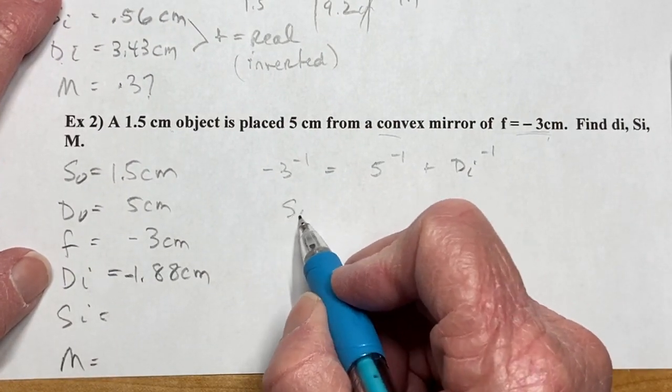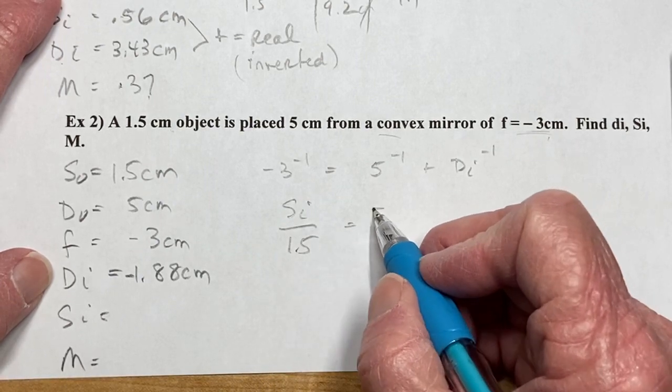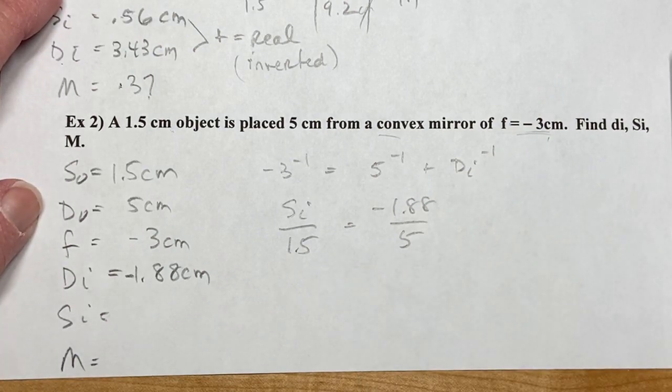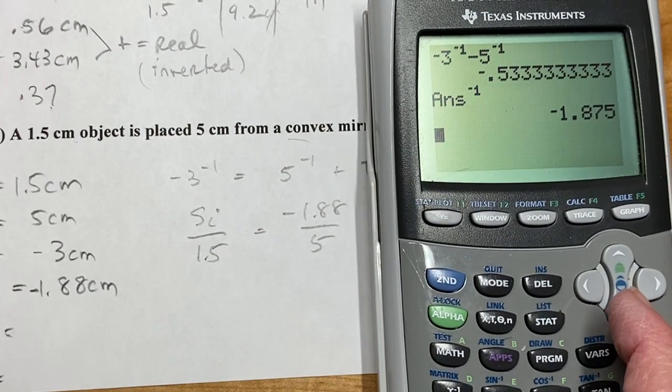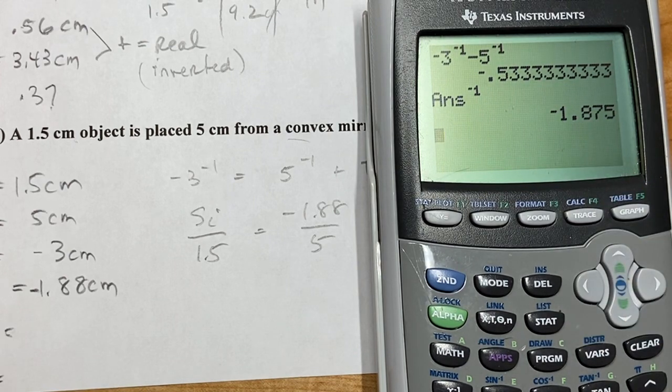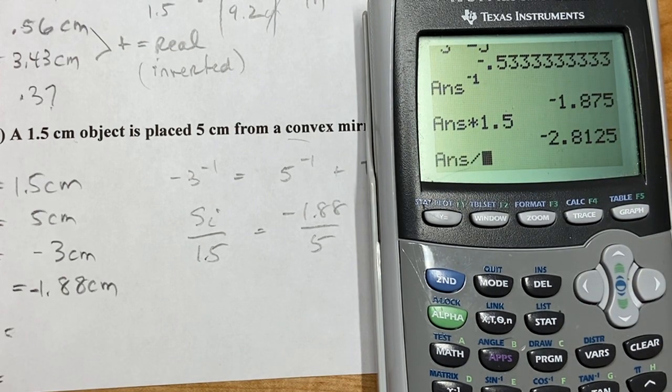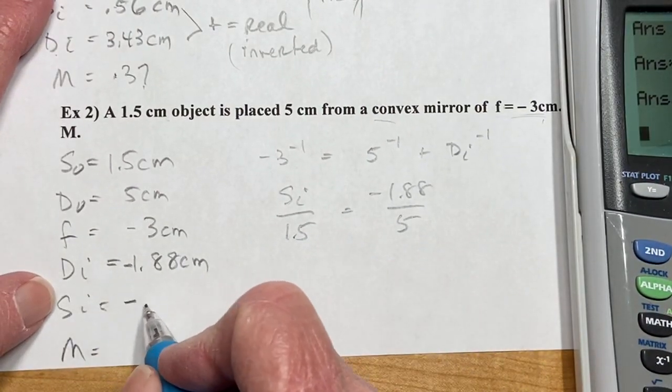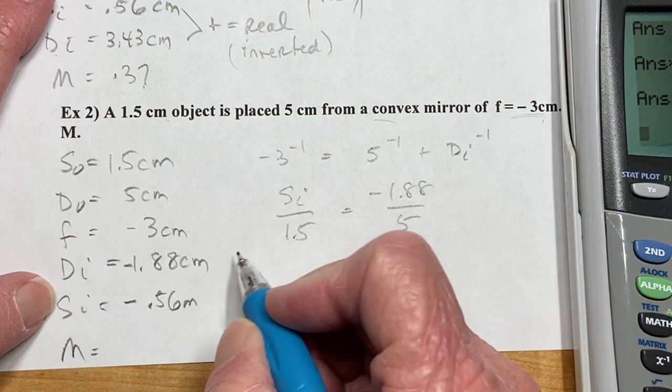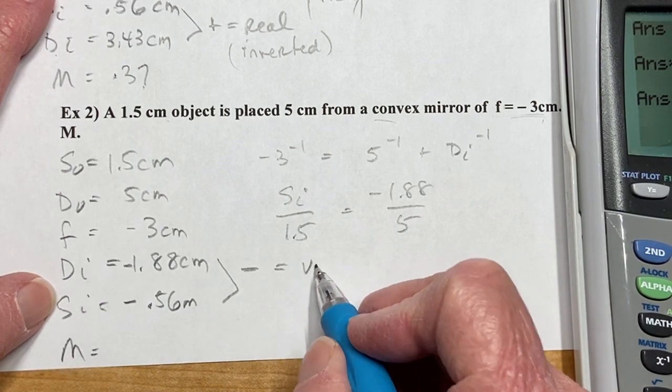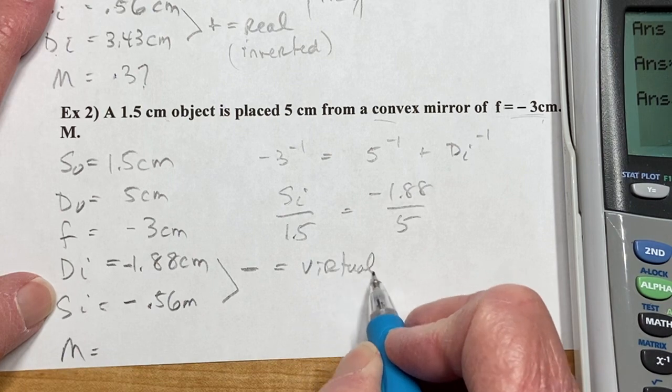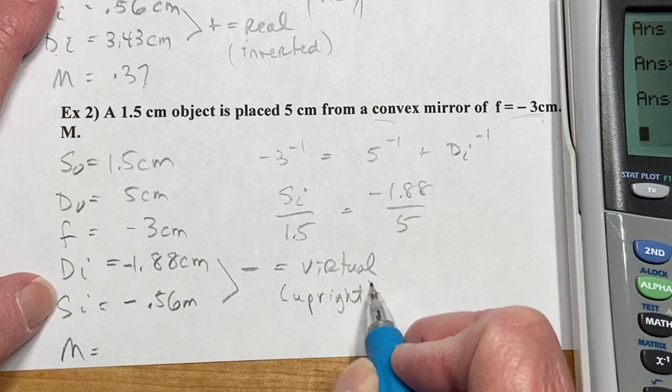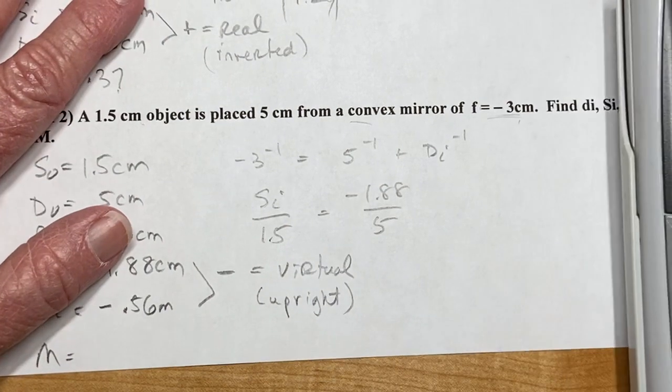All right, so si over so, di over do, and then I'm just going to cross multiply. The easiest way to do those. So I'm going to leave this in the way I had it, times it by 1.5, and divide it by 5, and I get a negative 0.56, and negative is okay. The negatives mean virtual, and virtual is always upright, and those negatives will include it.